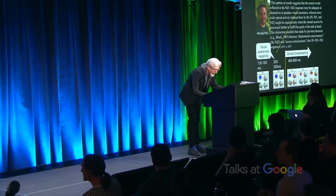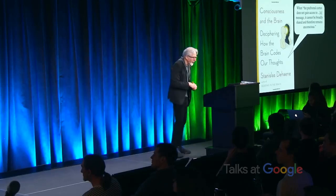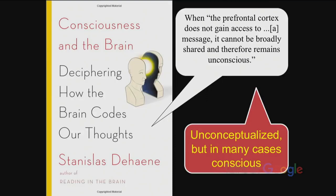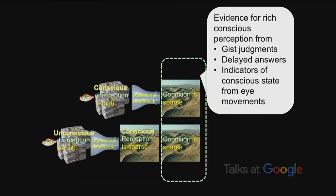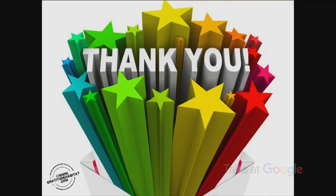According to a 2014 book by Stanislas Dehaene, when the prefrontal cortex does not gain access to a message, it cannot be broadly shared and therefore remains unconscious. What I think is that that's unconceptualized, but in many cases still conscious. To sum up, the evidence for rich conscious perception stems from these delayed indicators and from eye movements. Phenomenal consciousness probably is not as informational a thing as access consciousness, so I think it's likely to resist computer approaches. Thank you.